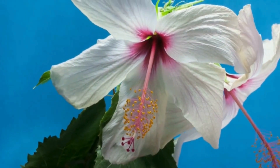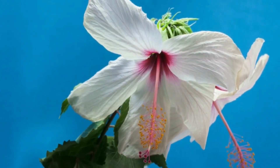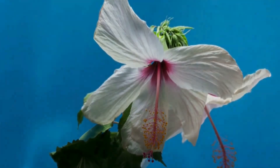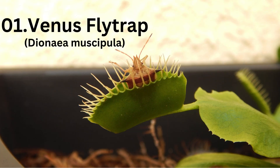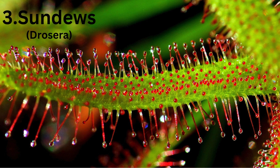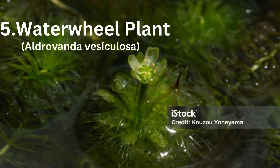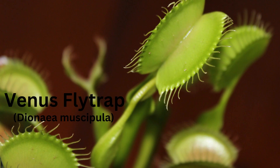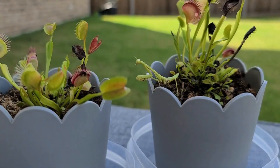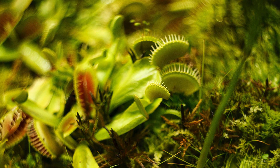There are various types of carnivorous plants, each with its own set of adaptations. One well-known example is the Venus flytrap, Dionaea muscipula, a carnivorous plant native to the southeastern United States.